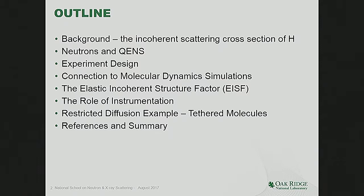One reason I really like quasi-elastic neutron scattering is the very strong connection to simple theories like molecular dynamic simulations, which are relatively simple to do these days with lots of tools. I'll tell you about the elastic incoherent structure factor, a method to extract geometric information about types of diffusive motions that doesn't rely on sophisticated modeling. I'll also cover the role of instrumentation — the time scales, length scales, and samples you can probe — and give you an example using more than one instrument and dynamic range.